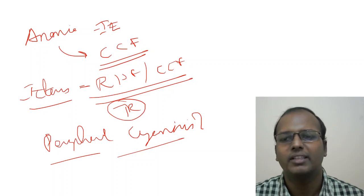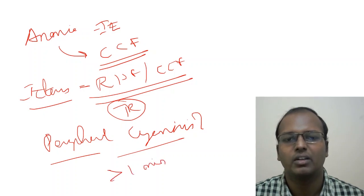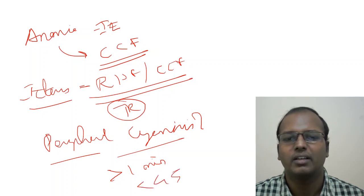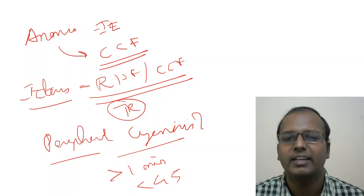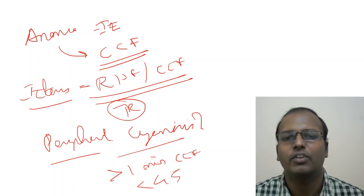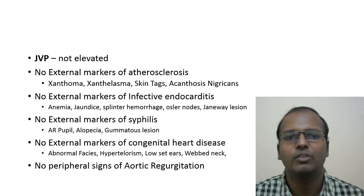Lymphadenopathy does not carry much significance here. Pedal edema is very important — there are two types: slow edema and fast edema. Slow edema takes more than one minute to recover. Apply pressure behind the medial malleolus; if pitting takes more than one minute, it suggests heart failure. If it disappears in less than 45 seconds, it suggests hypoproteinemia. These are the clues you can get from pallor in cardiovascular system.